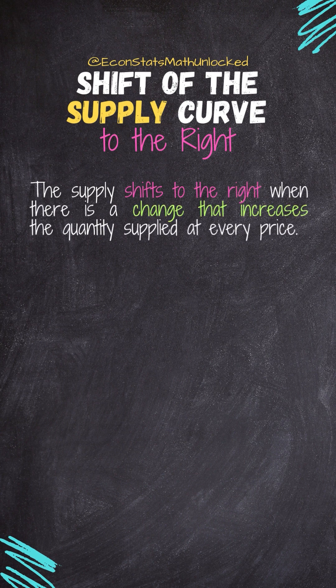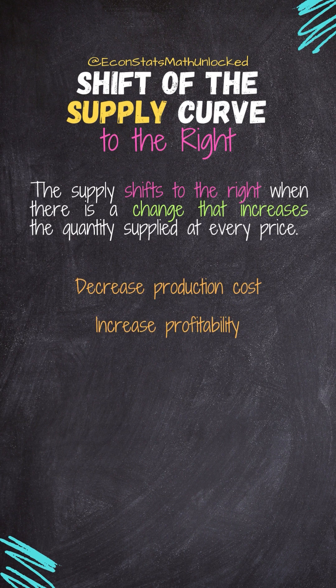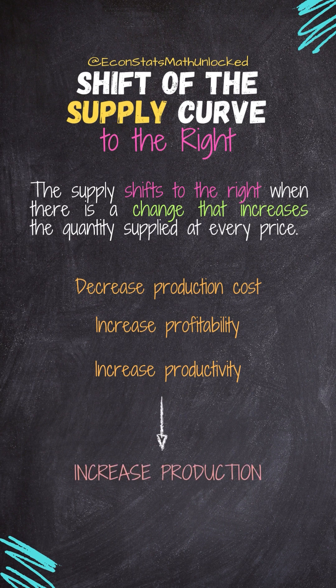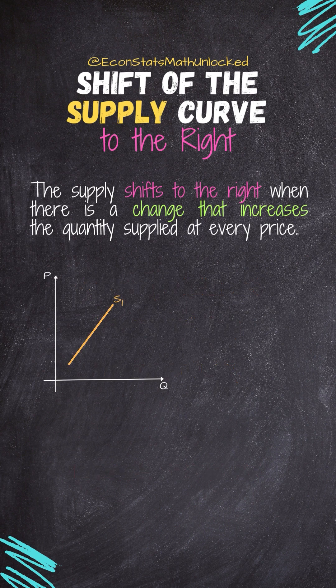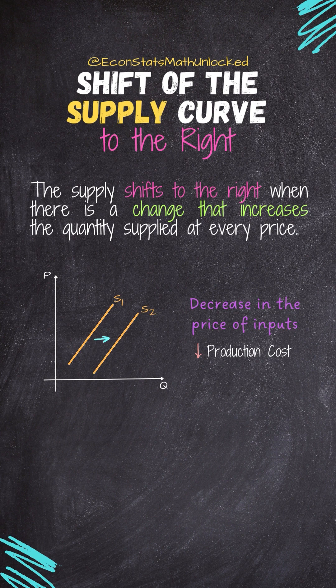When does it happen? When we have changes in factors that decrease production cost, increase profitability, or increase productivity. One such factor is a decrease in the price of inputs. It becomes cheaper to produce the good or service, which shifts the supply curve to the right.